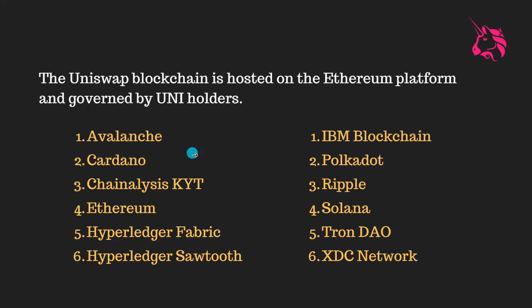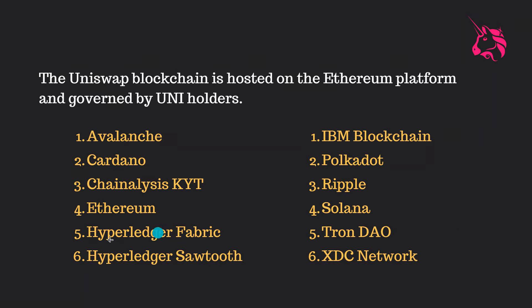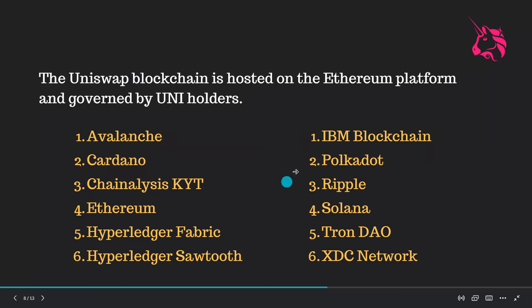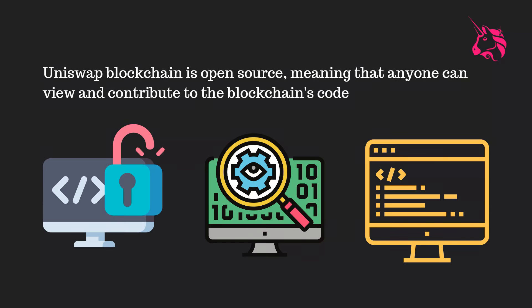There are multiple blockchains — all together there are twelve popular ones, including Avalanche and going all the way to the XDC network. However, the Uniswap smart contract is deployed on the Ethereum blockchain specifically.